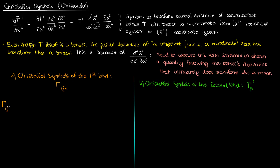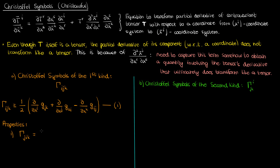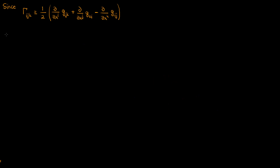The Christ-awful symbol of the first kind is defined by taking various partial derivatives of the metric tensor with respect to different coordinates in our unbarred coordinate system — I'll call this equation 1. This first kind Christ-awful symbol has some obvious properties. The first is that it's symmetric in the first two indices, so if I switch the indices i and j to make a Christ-awful symbol gamma sub j, i, k, the value doesn't change — it's the exact same as gamma sub i, j, k. You can easily demonstrate this property from the definition.